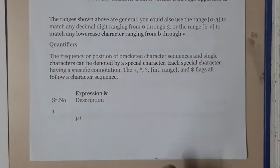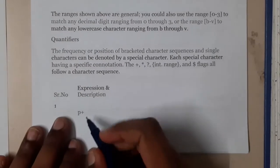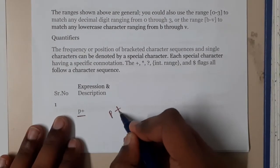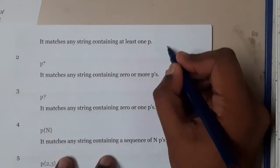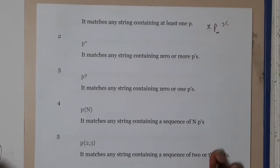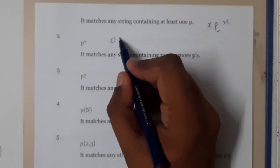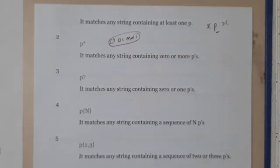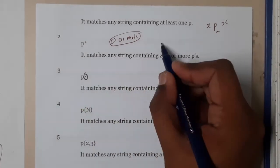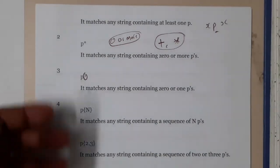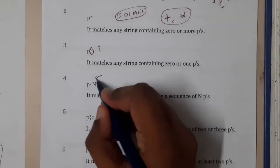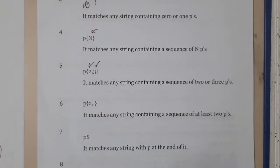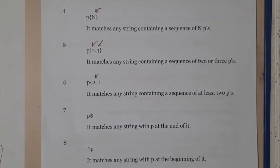Now let us go through some expressions. The first expression is 'p+' — plus means at least one item, so at least one p should be there. Similarly, 'p*' — star means zero or more. 'p?' — question mark indicates zero or one. 'n' indicates the natural number series. '{2,3}' indicates two or three, specific numbers, whereas '{2,}' means two to infinity, i.e., at least two.